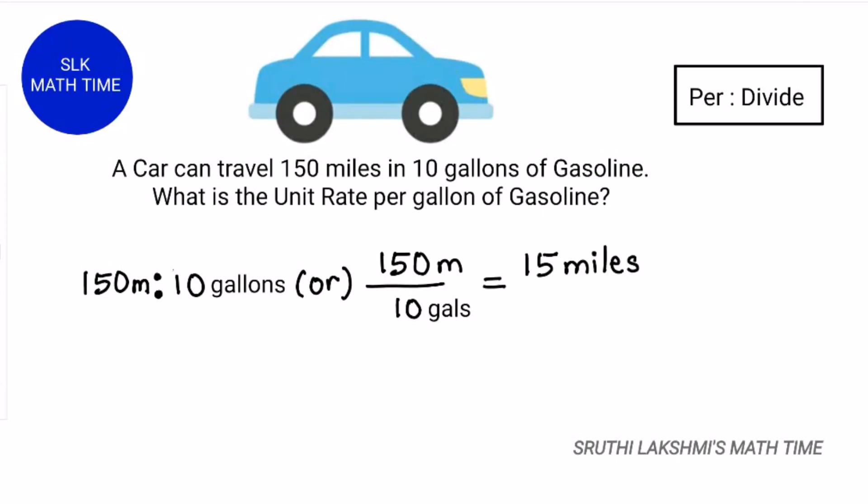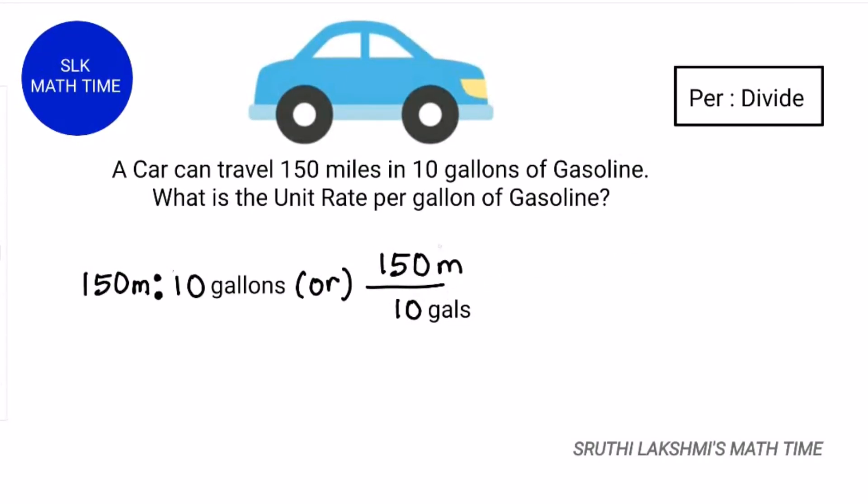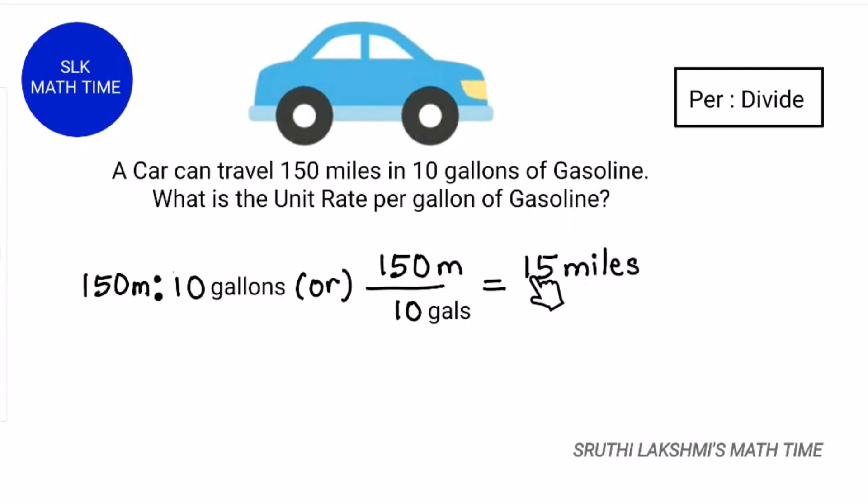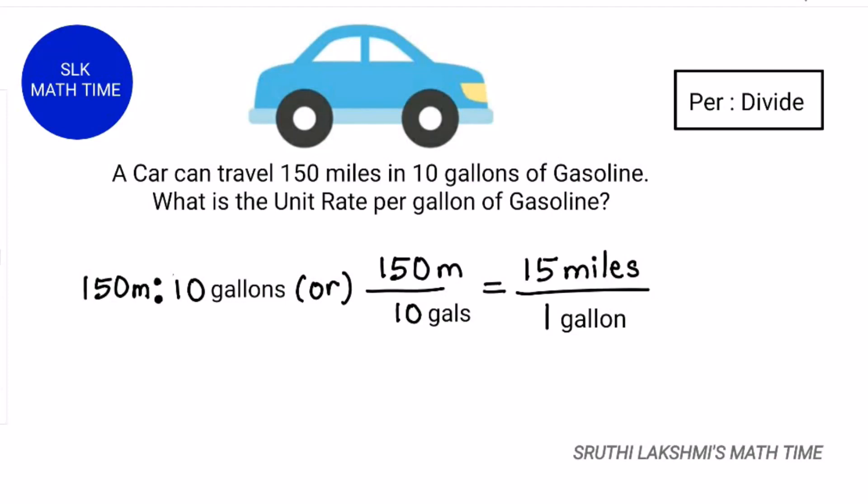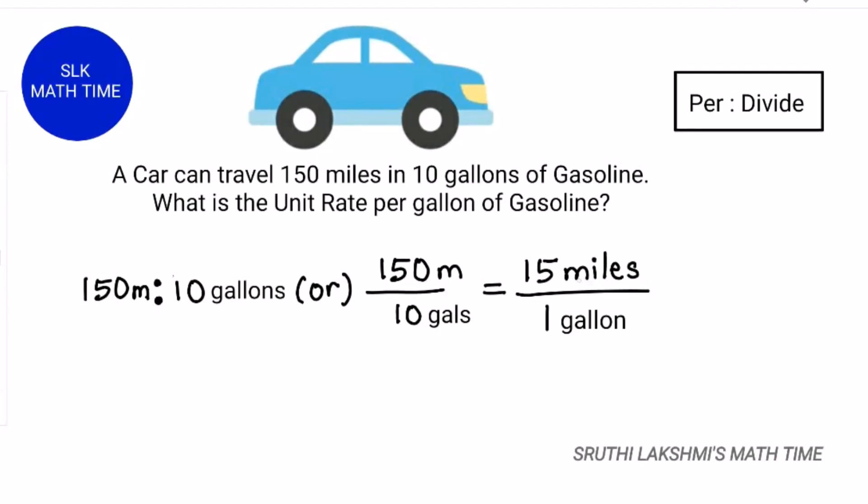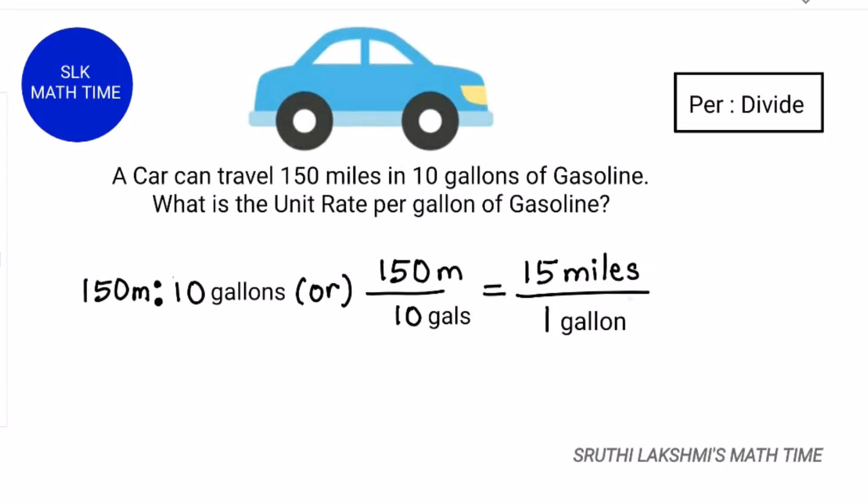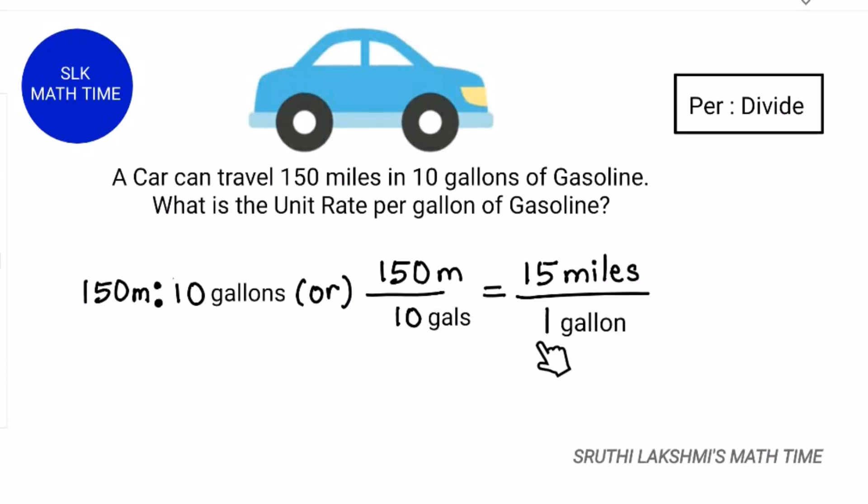We have to divide 150 by 10. 150 divided by 10 is 15 miles, and 15 miles can be written as 15 by 1. So the unit rate per gallon of gasoline is 15 miles by 1 gallon. For each 15 miles, it is 1 gallon.